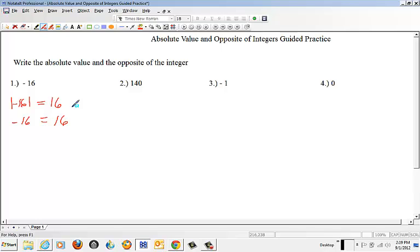The second one says, what is the absolute value of 140? Okay, we said the absolute value is the distance from 0. So 140 is 140 units from 0.